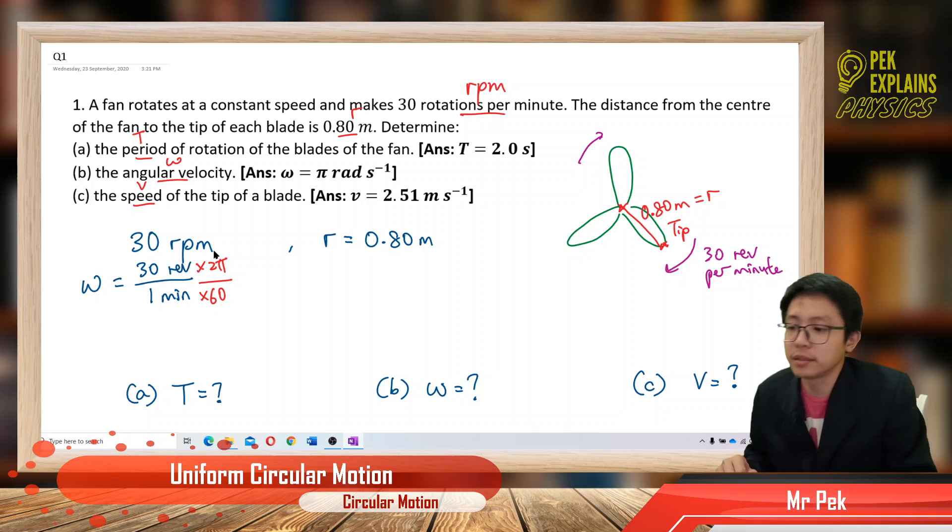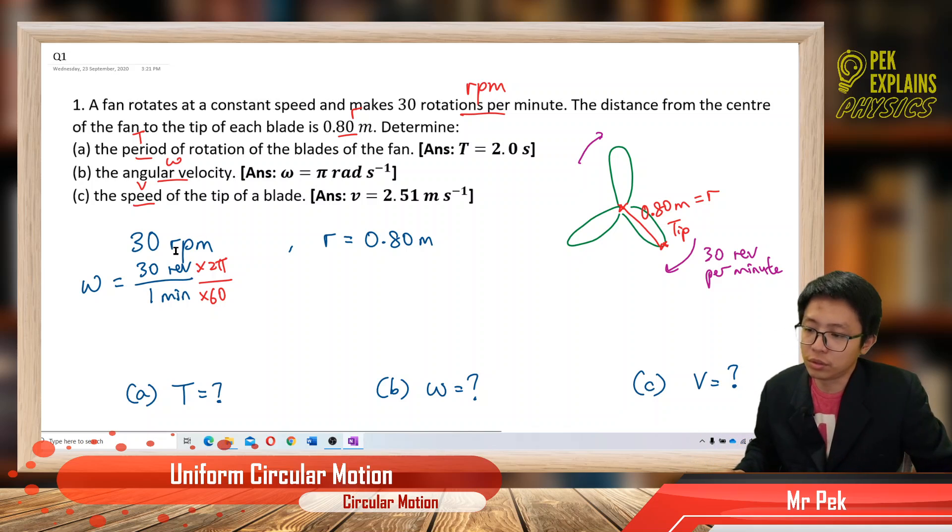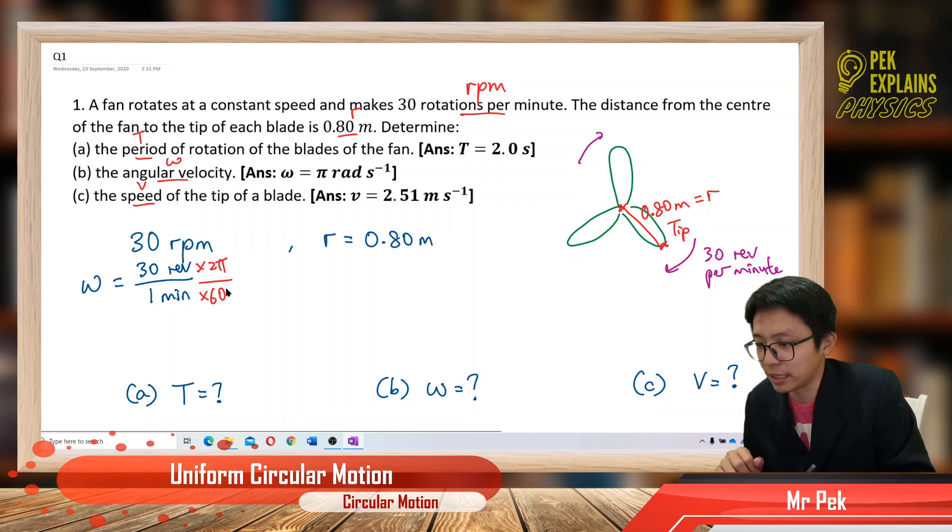So revolution per minute change to radian per second, you just multiply 2π over 60. Then you get the answer.